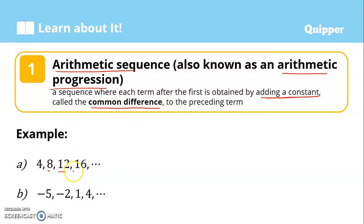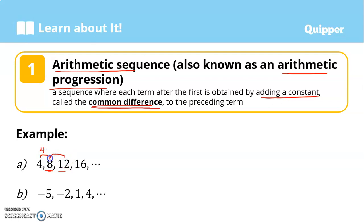For example, we have 4, 8, 12, 16, and so on. We can determine that this sequence is arithmetic if there is a common difference. To find the common difference, subtract the previous term from the next term. So that would be 8 minus 4, and that is 4. 12 minus 8 is also 4. 16 minus 12 is also 4. So the difference is constant — the difference is common.